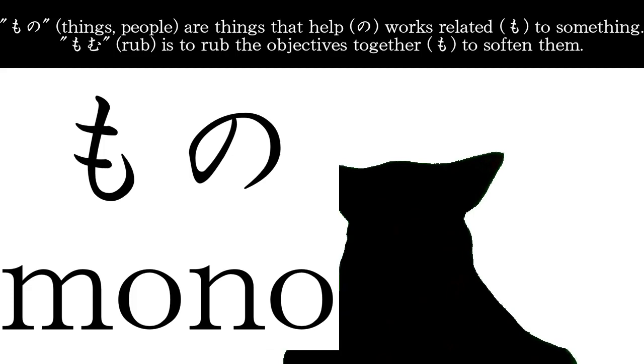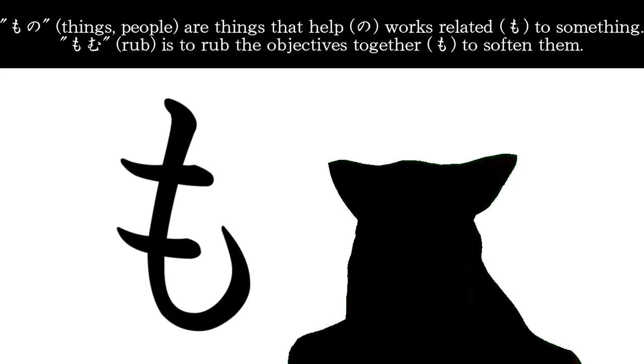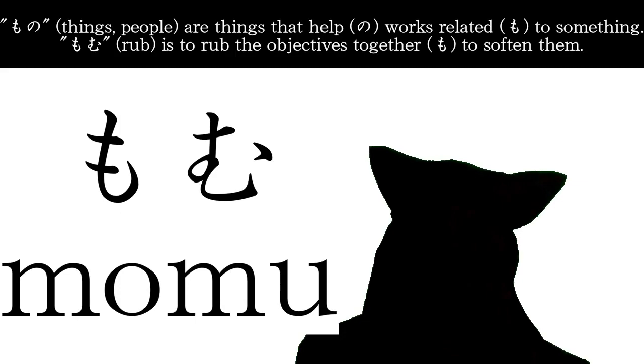Mono, which is things or people, are things that help words related to something. Mono, which is love, is to love the objectives together to soften them.